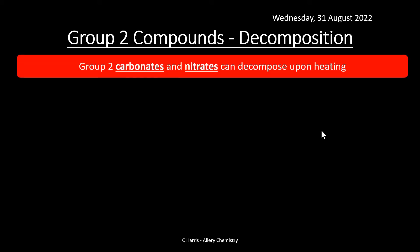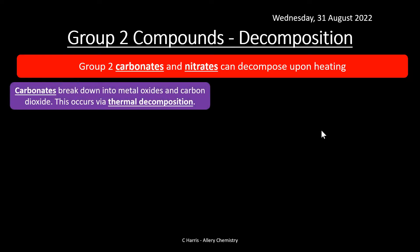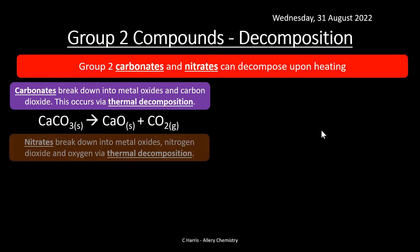Now let's look at decomposition. Group 2 carbonates and nitrates can decompose upon heating. Carbonates break down into metal oxides and carbon dioxide — any carbonate, when heated, will produce CO₂. This occurs by thermal decomposition. For example, calcium carbonate produces calcium oxide and carbon dioxide.